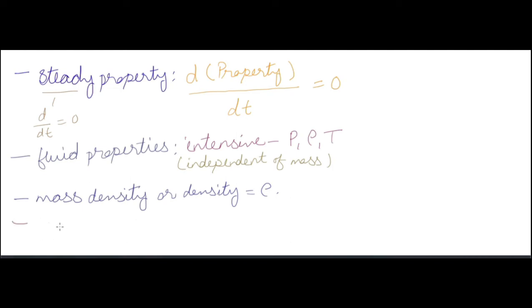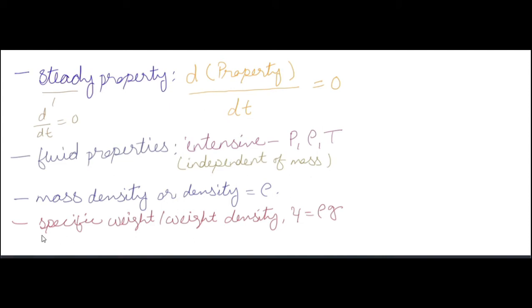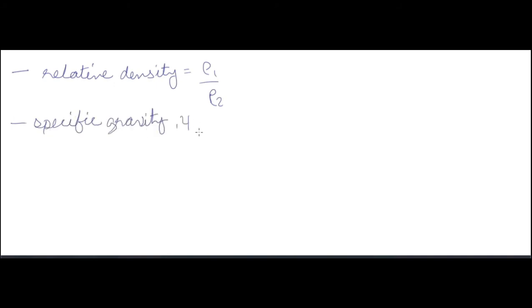Mass density, or density, is mass per unit volume: rho = m/V, in kilograms per cubic meter. Specific weight, or weight density, gamma = rho × g. Note: unlike other 'specific' terms (like specific enthalpy or specific volume) which are per unit mass, specific weight is weight per unit volume. Gamma = rho × g, where g = 9.81 m/s².